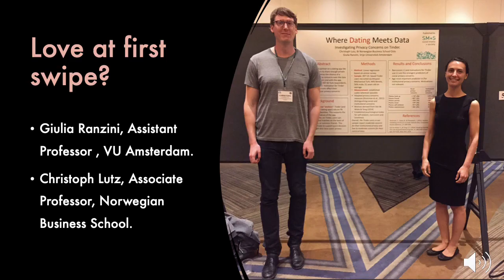For our second text — and this one is an academic journal article, whereas the previous one was an academic book chapter, a common split we'll have throughout the semester — Julia Ranzini and Christopher Lutz, in their article 'Love at First Swipe,' are doing more quantitative research on online dating and Tinder in particular. They take a different approach to presenting how that research was designed and the kinds of responses they got before giving their analysis and interpretation. One thing I want us to get comfortable doing throughout the semester is noticing how to find and identify the research question and the methods in all of the academic journal articles we're reading.